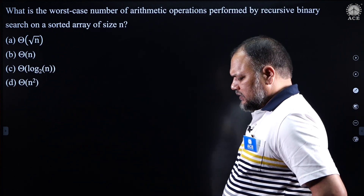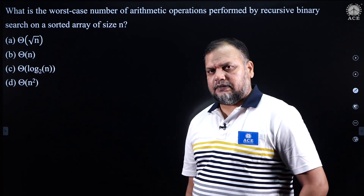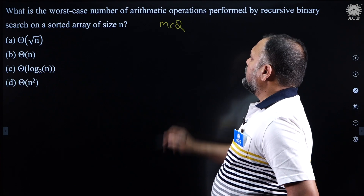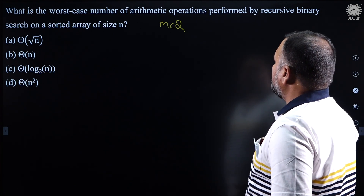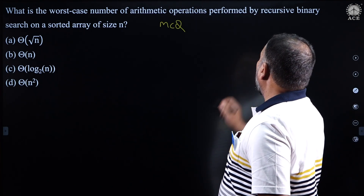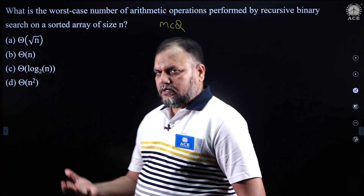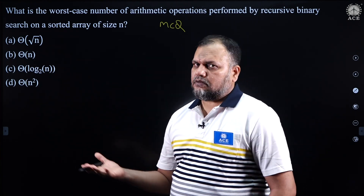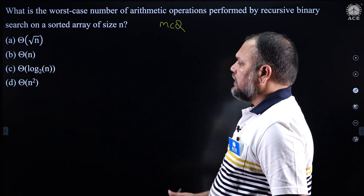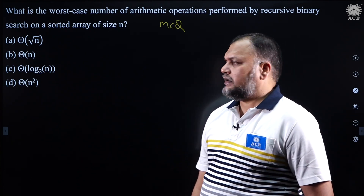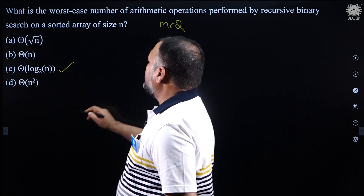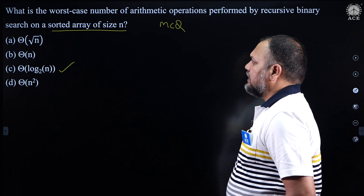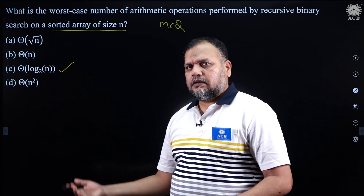Let us see this question, a very straightforward question. I do not know why it was given in the great exam — a very direct problem. There is also an MCQ question. What is the worst case number of arithmetic operations involved in recursive binary search on a sorted array? We all know binary search makes comparisons proportional to log n. Since it is sorted in an array, the worst case number of arithmetic operations performed recursively is order of log n.